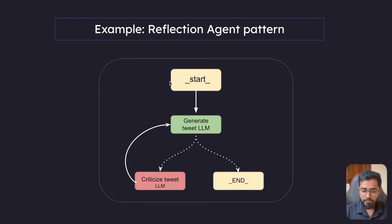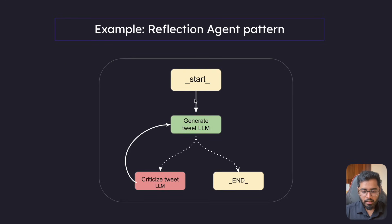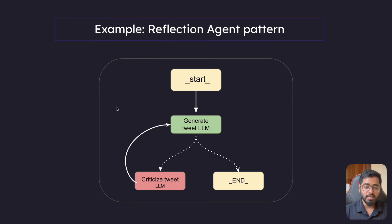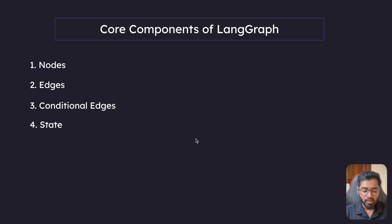Let's look at the core components. The start block, the generate tweet LLM block, the end block - these are what are basically called nodes. Edges are the lines connecting two nodes - whatever connects two nodes is called an edge. Conditional edges: the dotted line is what is called the conditional edge, because right after execution of a node, it can either go one way or another based on a condition.